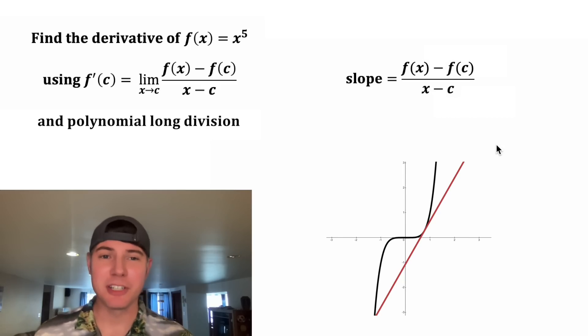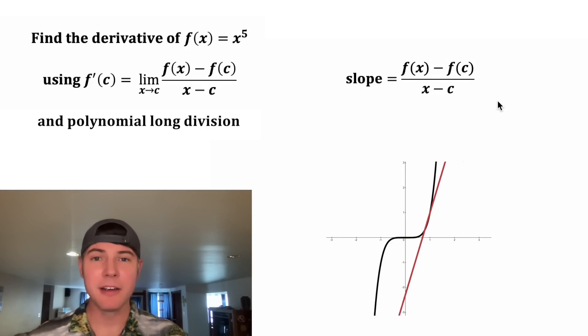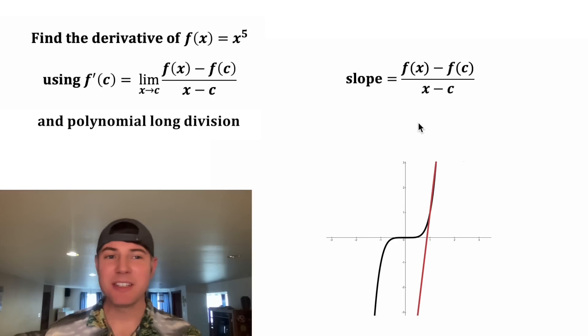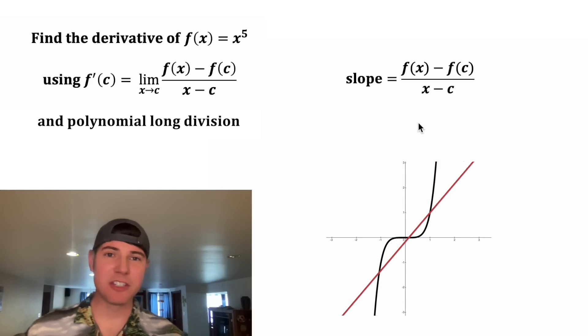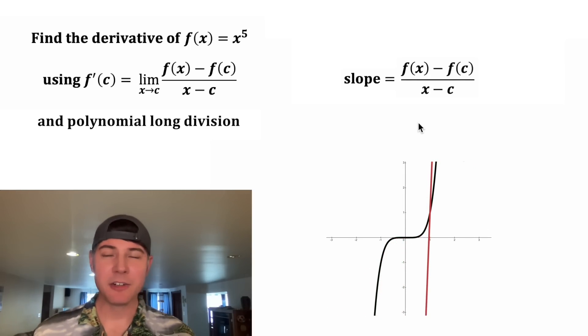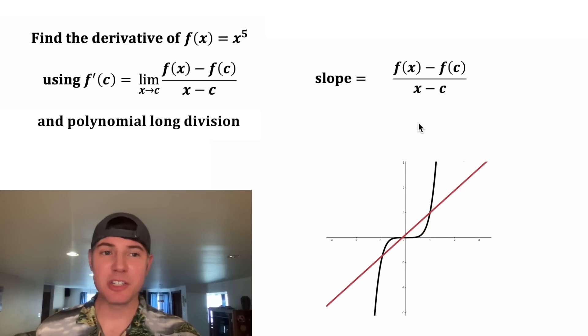Now we have a slope function like this. And for any point c, this will tell us the slope of the line for any value of x. But this is not the instantaneous slope. This looks different than our roller coaster headlight. In order to be the roller coaster headlight, we need to smush the x closer and closer to c until x is equal to c.